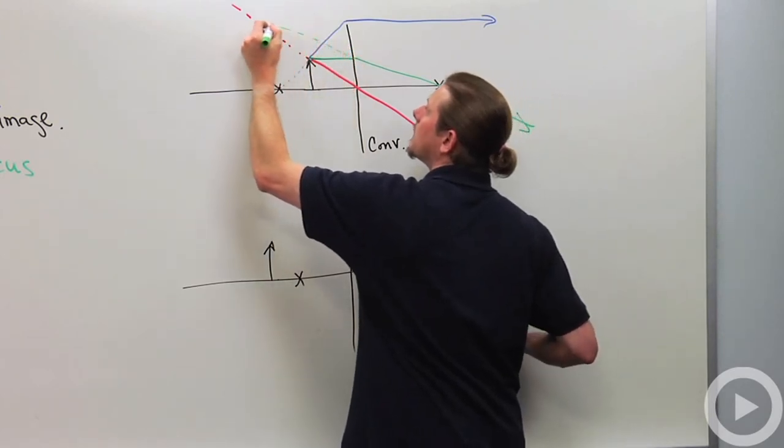Well, this red line looks like it's coming from there. This green line looks like it's coming from there. And this blue line looks like, and look at that, they all look like they're coming from this location right here. This is my image location. Notice that he is erect. He is virtual because the light didn't actually go through that point. Right?